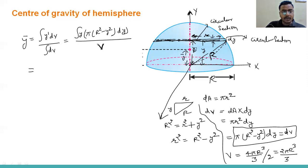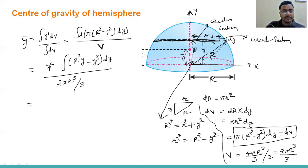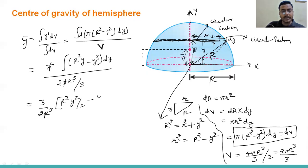Pi is a constant, so we take it outside the integration. Multiplying y inside gives us the integration of (R²·y - y³) dy. Putting in the value of V, which is 2πR³/3 in the denominator, pi and pi cancel, and 3 moves to the numerator. So we get (3/2R³) times integration of (R²·y - y³) dy. The integration of y gives y²/2, and the integration of y³ gives y⁴/4.